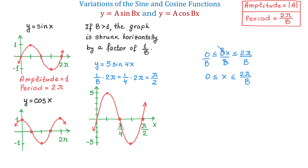So now we can say that if we have the form y equals a sine of bx or y equals a cosine of bx, then the amplitude is the absolute value of a and the period is 2 pi over b.